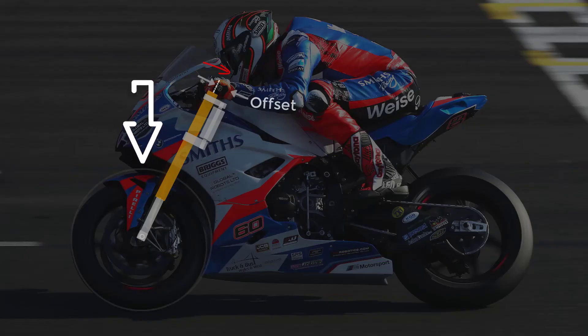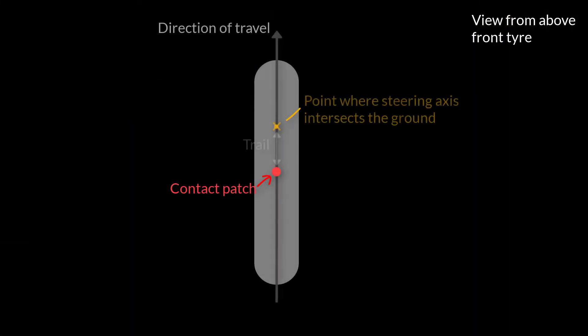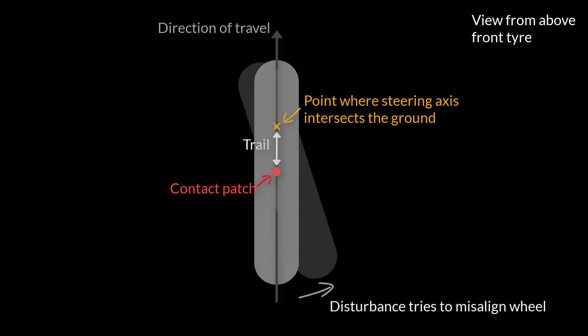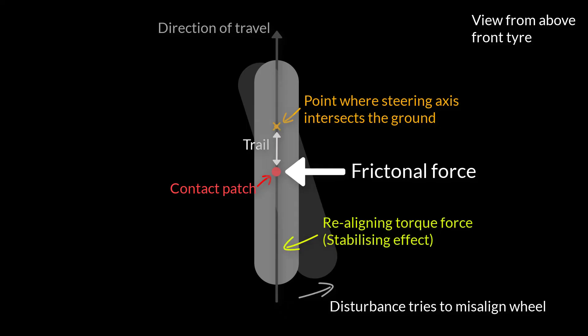To better understand what trail is actually doing, we need to look from above. When a disturbance tries to misalign the front wheel, a lateral frictional force acts at the contact patch and generates a realigning torque force. This tries to pivot the front wheel back in line with the direction of travel, generating a stabilising effect. The greater the trail, the greater this realigning torque force is and the more stable the system is.